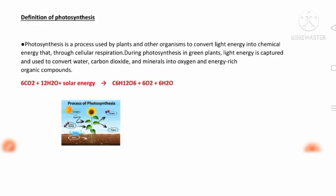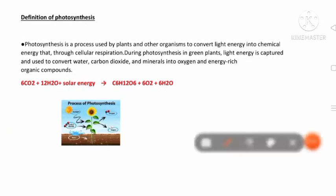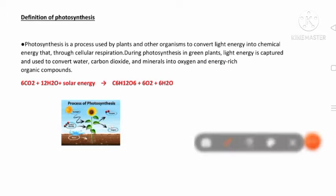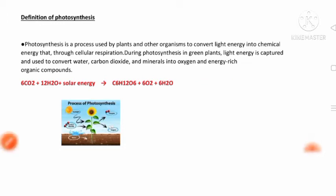Listen carefully. Photosynthesis is a process used by plants and other organisms to convert light energy into chemical energy. During photosynthesis in green plants, light energy is captured and used to convert water, carbon dioxide, and minerals into oxygen and energy-rich organic compounds. So in this process, green plants use sunlight, water, and CO2 — all three things are very necessary for photosynthesis.